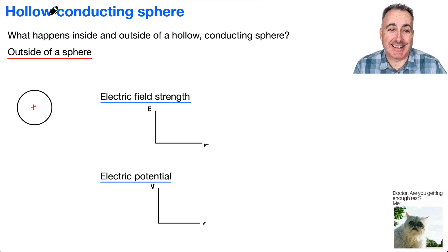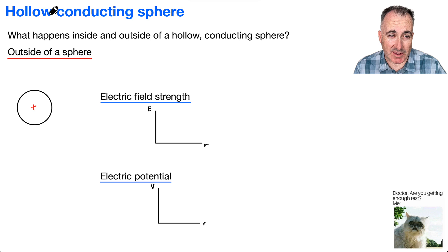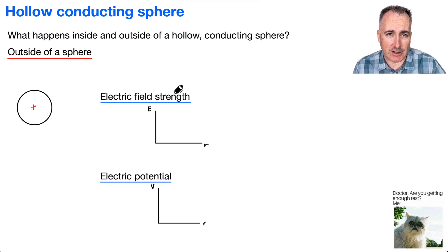Let's look at what happens inside and outside of a hollow conducting sphere. First of all, we're going to look at the outside of it. This is our sphere right here. And we're going to look at electric field strength.